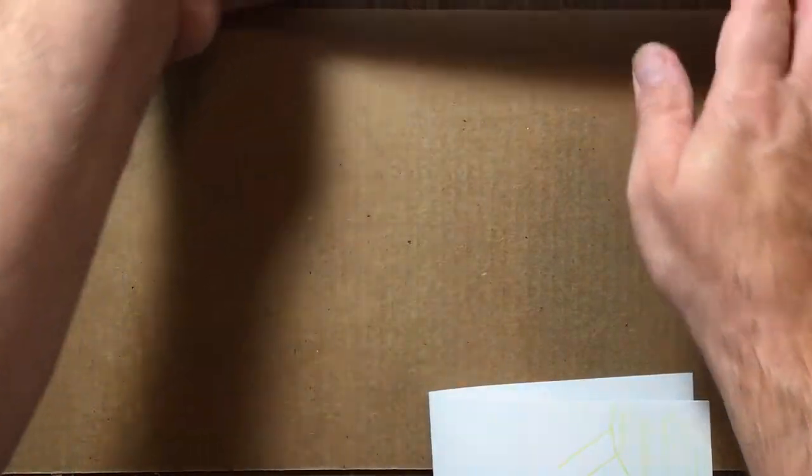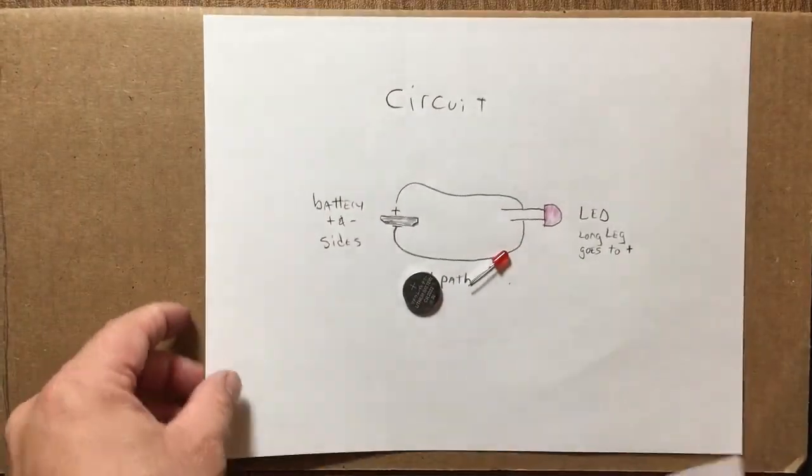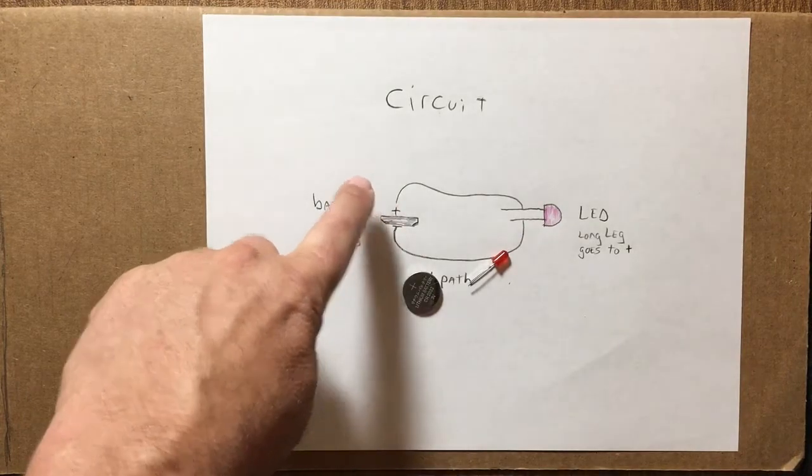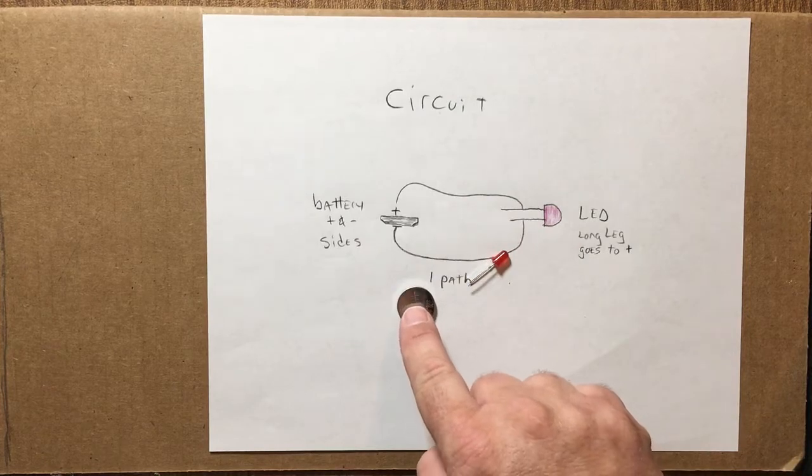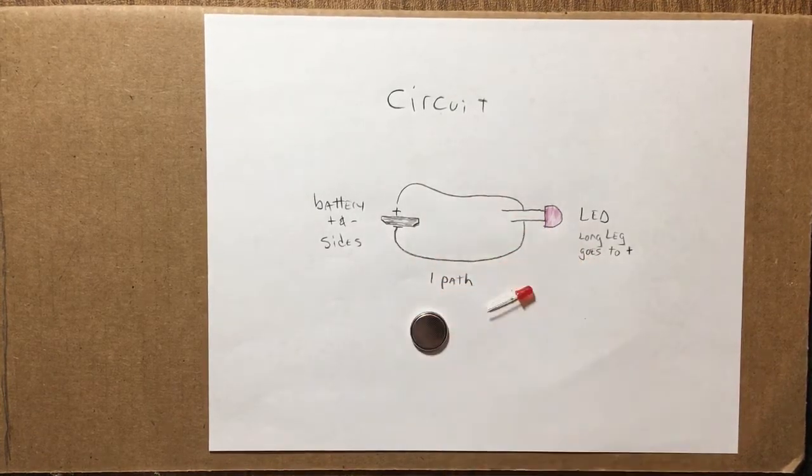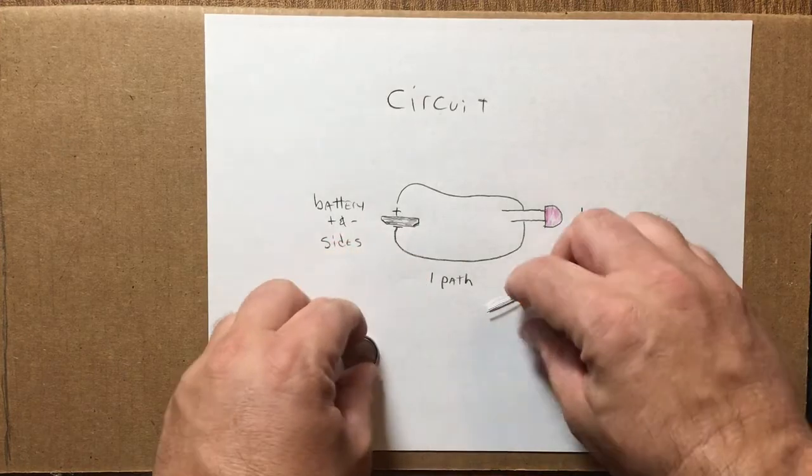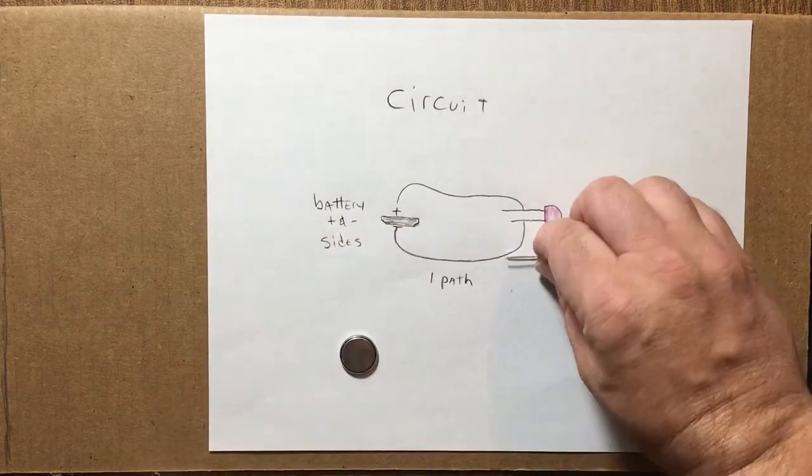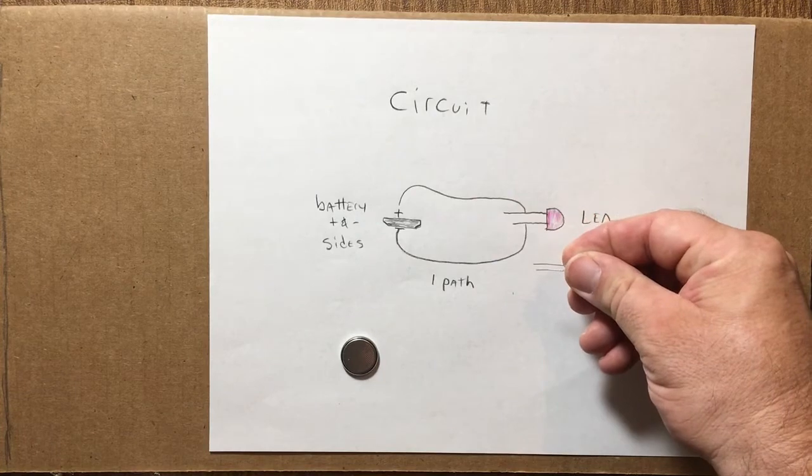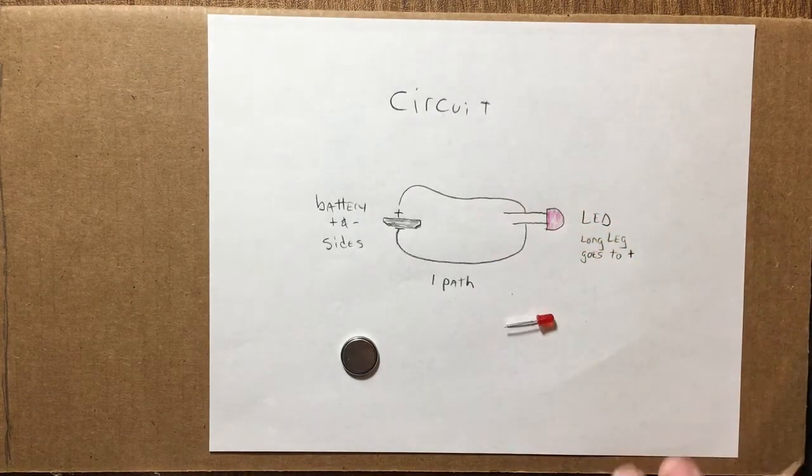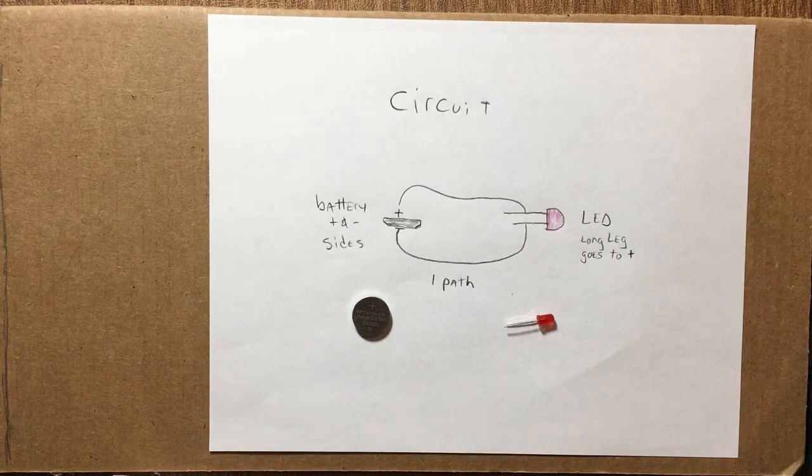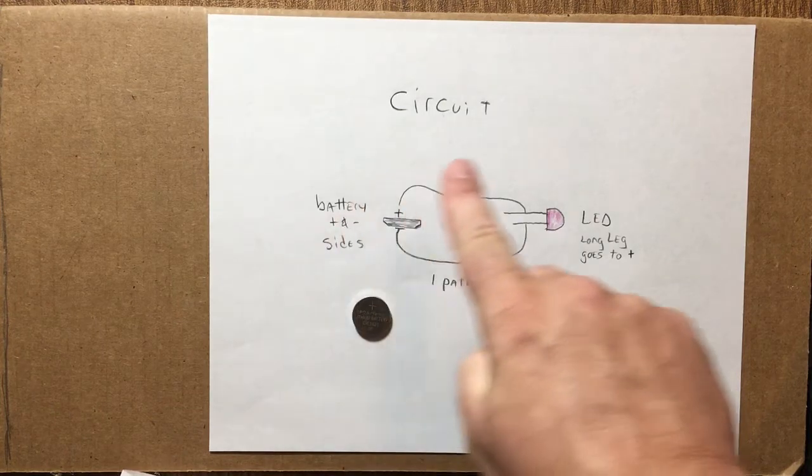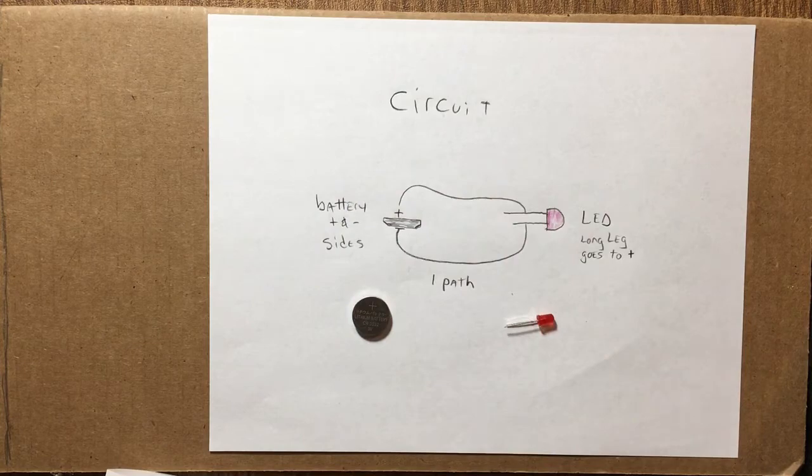Here's what a circuit looks like. We have a battery with a positive and negative side. If you look closely, there's a plus on it right there, so this side is positive and that side is negative. Then we have an LED. LEDs have legs of different lengths - the long leg goes to the positive side of the battery. It has to, or it won't work. That's our path, our loop, our circuit.